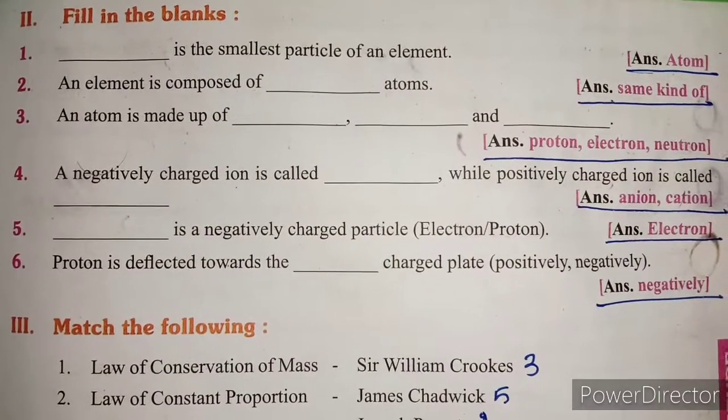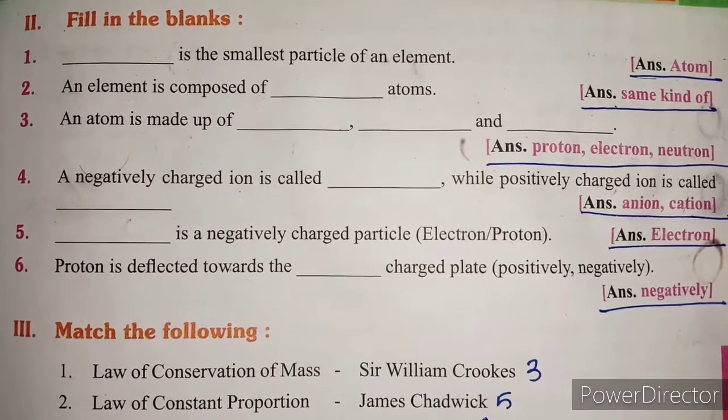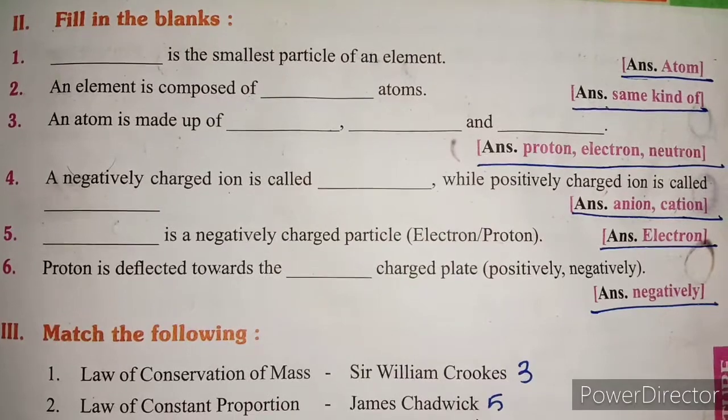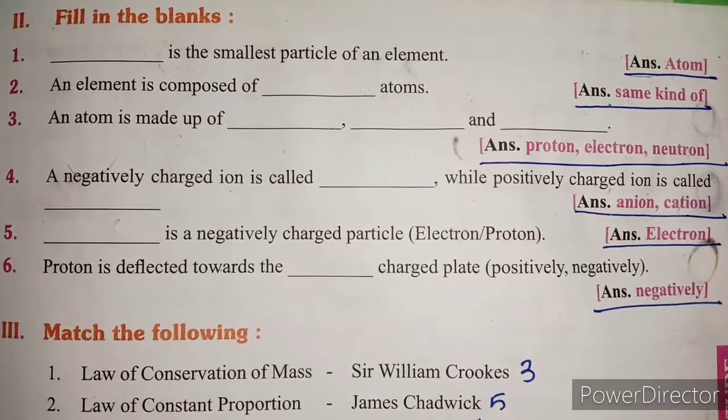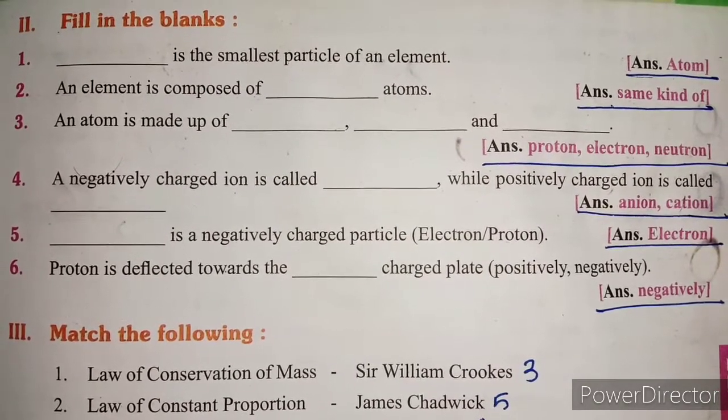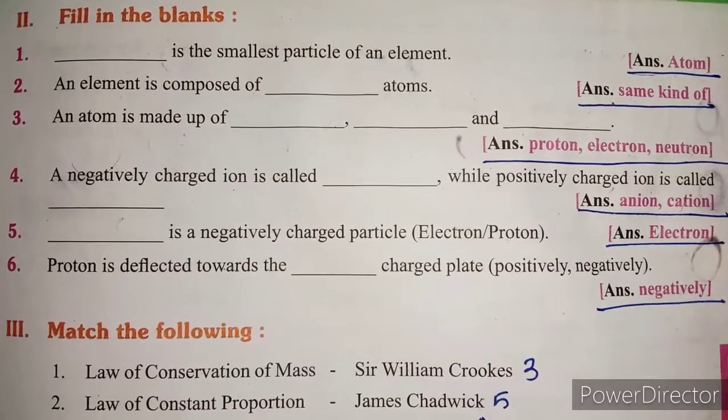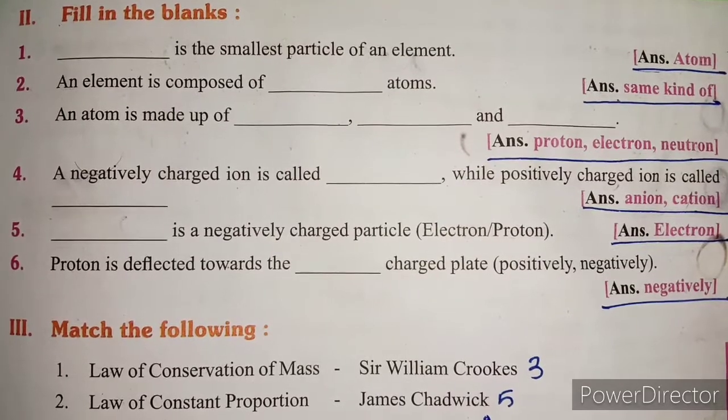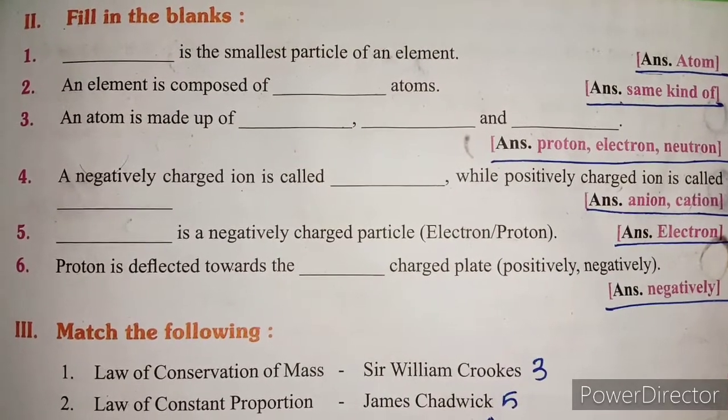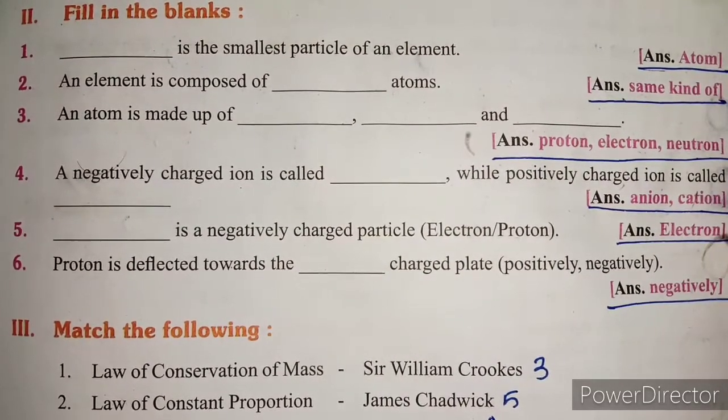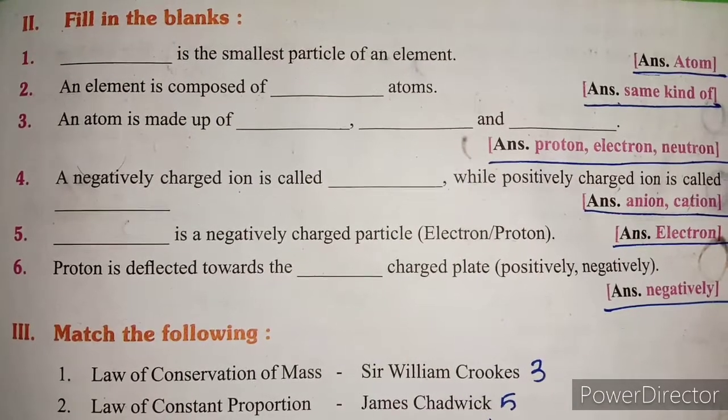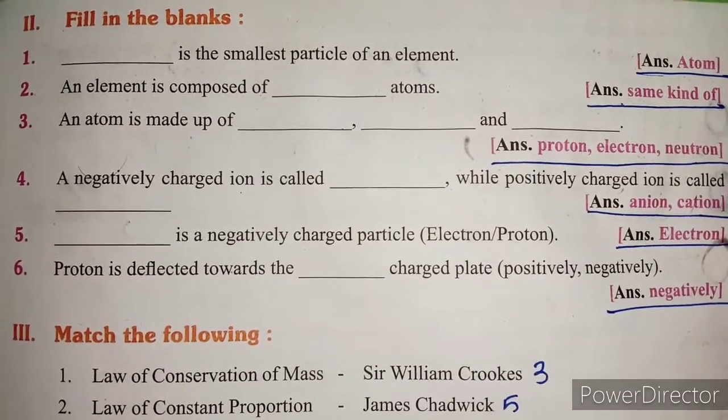Section 2: Fill in the blanks. Question 1: Atom is the smallest particle of an element. Question 2: An element is composed of the same kind of atoms. Question 3: An atom is made up of proton, electron and neutron. Question 4: A negatively charged ion is called